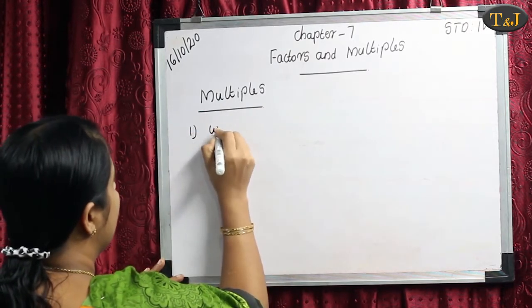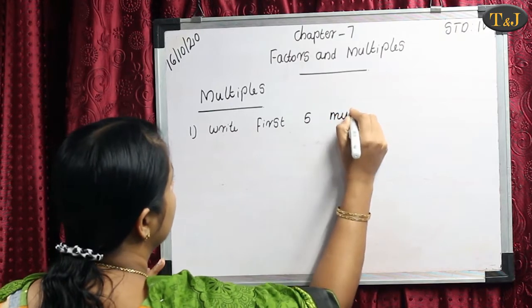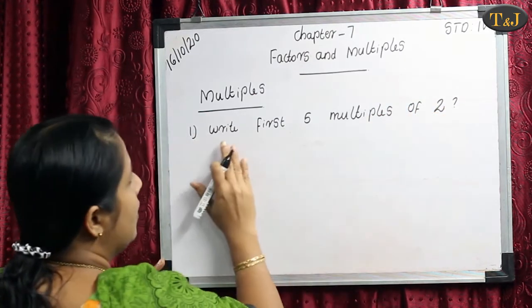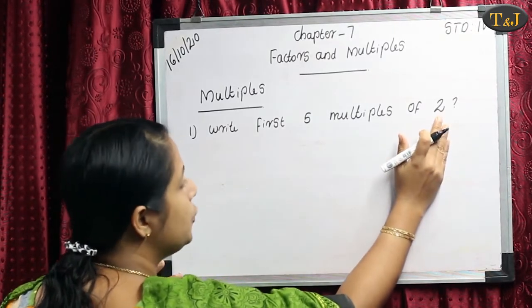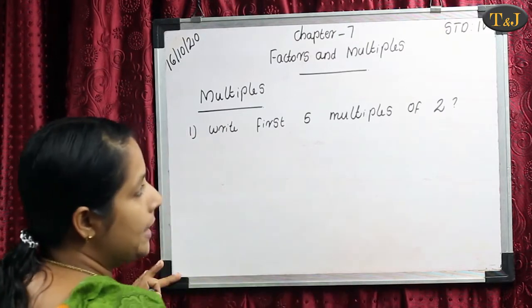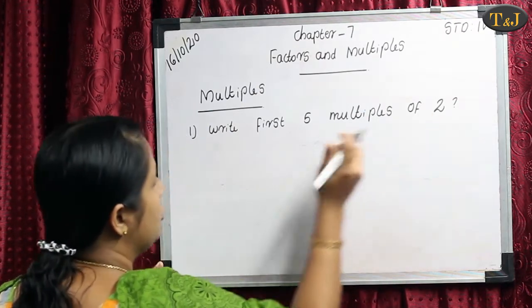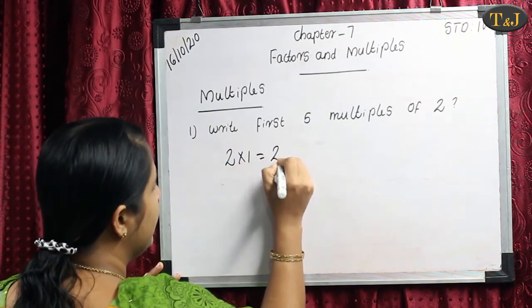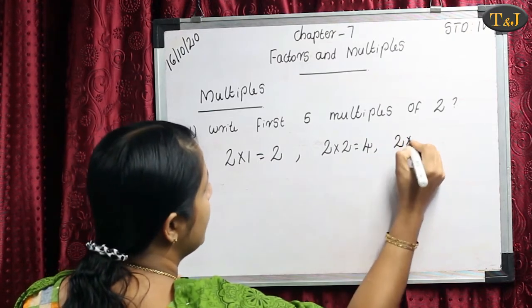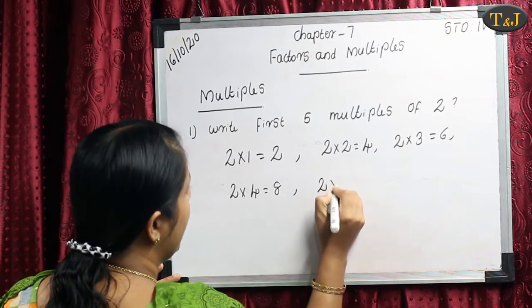Example: Write the first 5 multiples of 2. Here we want the multiples of 2. Multiples means that when we multiply a number — here our number is 2 — by 1, 2, 3, 4, 5. So first we write: 2×1 are 2, then 2×2 are 4, then 2×3 are 6, then 2×4 are 8, then 2×5 are 10.